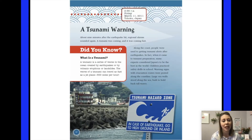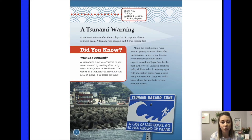A tsunami warning. About nine minutes after the earthquake hit, regional alarms sounded again — a tsunami was coming, and it was coming fast. Along the coast, people were used to getting tsunami alerts after earthquakes. Many experts considered Japan's tsunami preparation to be the best. Children practiced safety drills in school, warning signs with evacuation routes were posted along the coastlines, and large seawalls stood along the sea, built to hold back the tall waves.